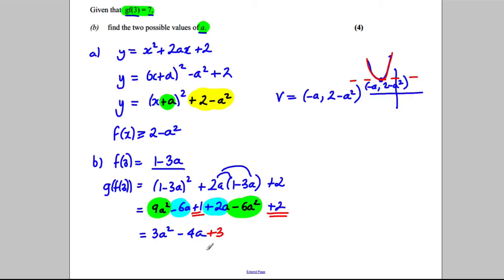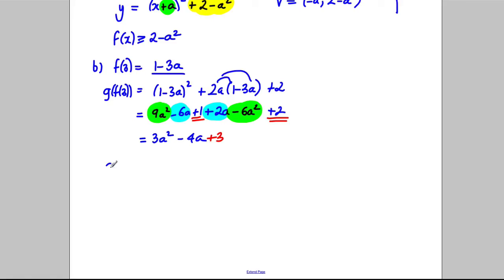So that's G of f of 3 and we're going to solve that equal to 7. We're going to say that 3a squared subtract 4a add 3 equals 7. Take 7 off both sides: 3a squared subtract 4a subtract 4 equals 0. Attempt to factorize this, so we're looking to multiply to negative 4 and add to negative 4a, so it's going to be a negative 2 and a positive 2.